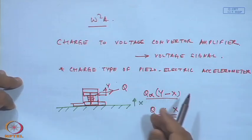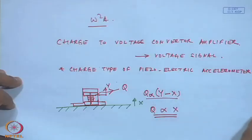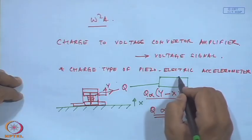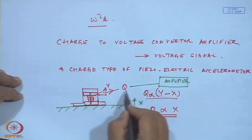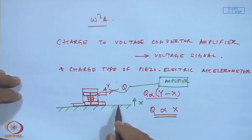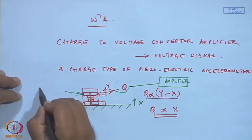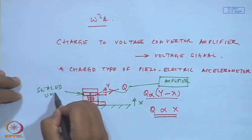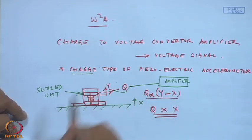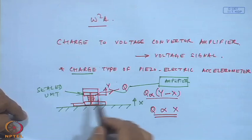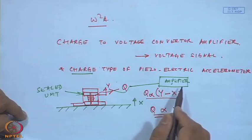Since charge cannot be stored and will decay with time, we immediately need a circuit to convert it to voltage. A charge-type accelerometer requires a charge-to-voltage amplifier external to the accelerometer. This is a sealed unit. The advantage of the charge-type accelerometer is that it can be subjected to very high temperatures. However, the disadvantage is that you must carry a separate charge-to-voltage preamplifier with the accelerometer.